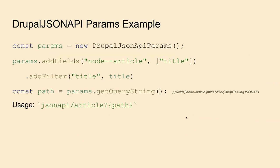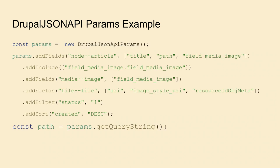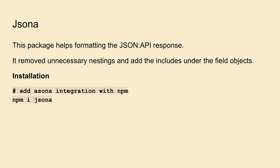With `drupal-jsonapi-params` you create a new object, add fields specifying the bundle ID with an array of field names, and add filters — which builds the same query string we saw earlier. It's especially handy for more complex queries where you need to add fields from `node--article`, include media, call fields from media and file URI, filter by node status, and add sorting.